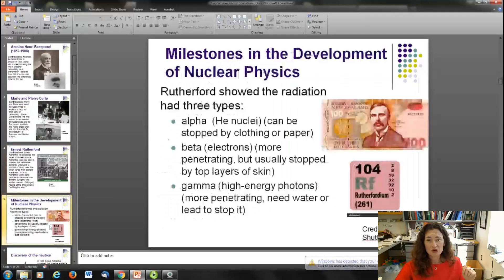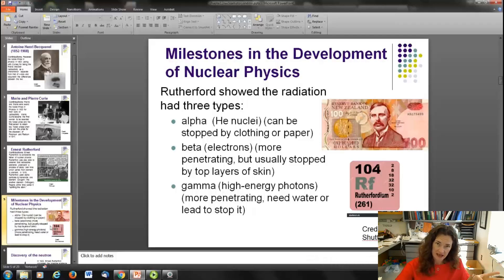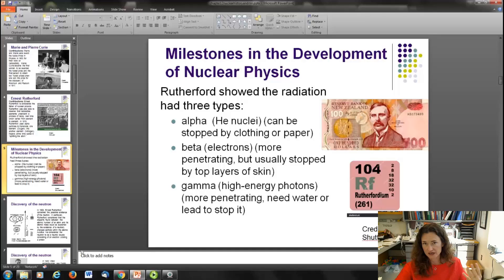Rutherford actually also showed that the radiation came in three different types, and he called it alpha, beta, and gamma after the first letters of the Greek alphabet. Alpha particles are helium nuclei, and they can be stopped by clothing or paper because they're very large. Beta radiation is electrons or positrons. They're usually more penetrating, but they're still stopped by the top layers of your skin. Gamma radiation is very high energy photons, and those are much more penetrating radiation and you need water or lead generally to stop it.